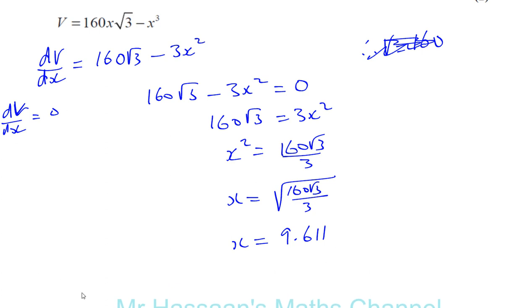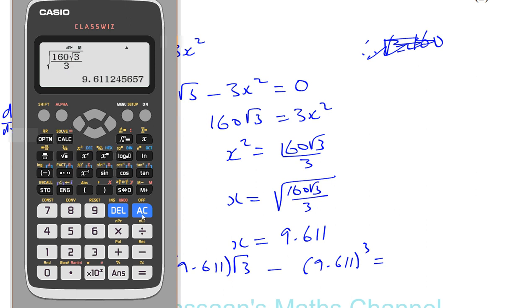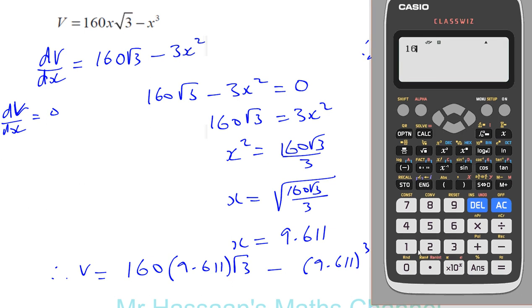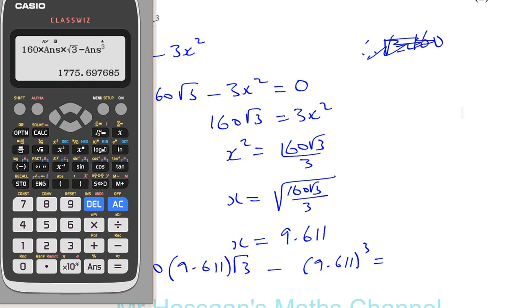Okay, the volume will be... So therefore, the volume is going to be 160 times our X value, which you can write as 9.611, times root 3 minus 9.611 cubed. And what we can do is you can use our answer in our calculator and proceed like this. That's the answer in our calculator. So we can do 160. I'll show you what's going on. So put it here: 160 times the answer times root 3. Okay, minus our answer cubed.